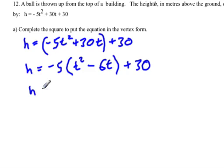So we're going to write this as negative 5 and t squared minus 6t plus 9. That would be the perfect square trinomial, but we just can't add 9, so we have to subtract 9.